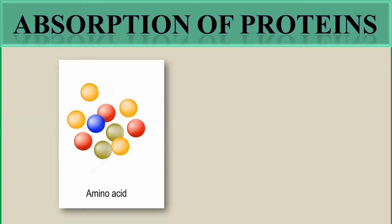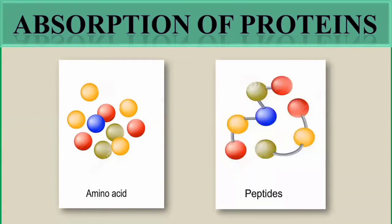Proteins are completely digested into amino acids that will be present in the small intestine. However, some proteins are not completely digested into amino acids; they remain in the form of peptides — tripeptides or dipeptides — and these can also be absorbed through the intestinal lining into the intestinal cells. So mostly there are amino acids, but some can also be in the form of peptides.